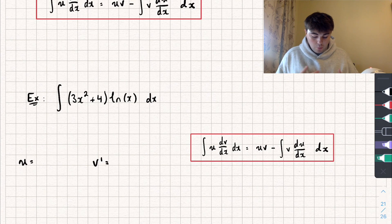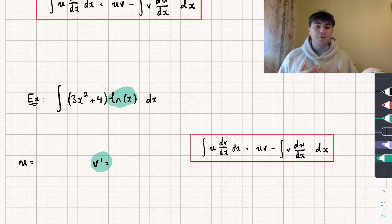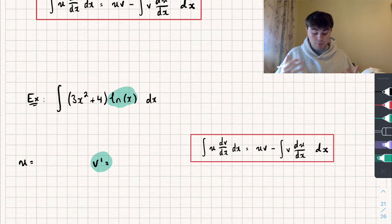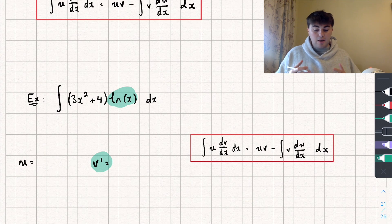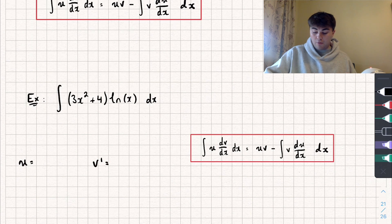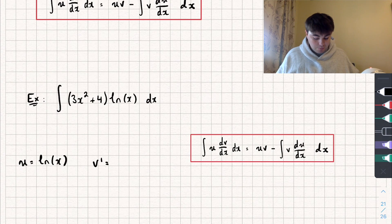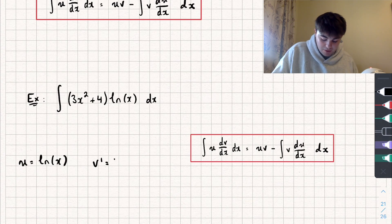The way we're going to work it out: if I set the natural log of x equal to my derivative of v, that means I'd have to integrate it to do integration by parts, and to integrate the natural log of x I'd need to do integration by parts on it — which seems like more work. So I'm just going to set u equal to the natural log of x, because I can take the derivative of that quite easily, and then my derivative of v is going to be 3x squared plus 4.